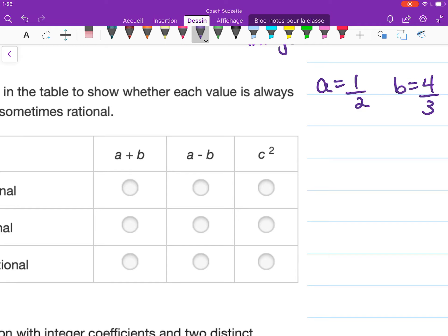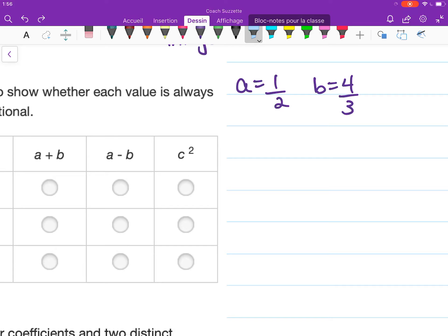Then in this first case, what would we get if we added them? Well, A plus B means we have 1 over 2 plus 4 over 3.